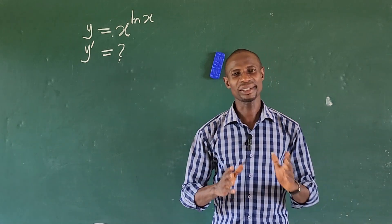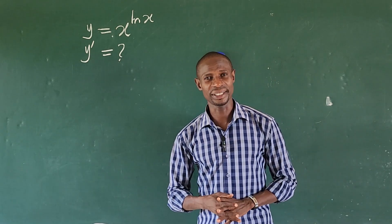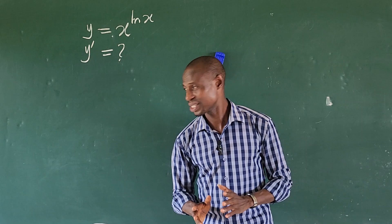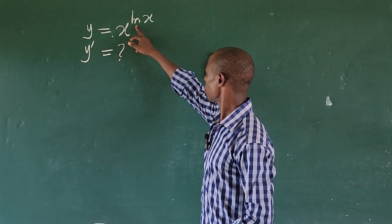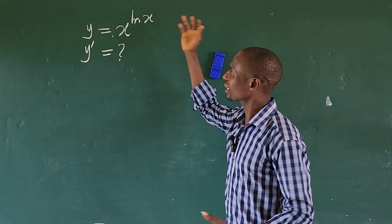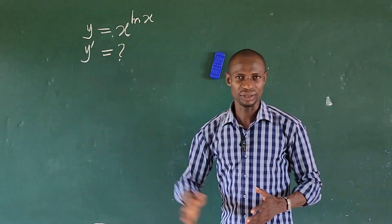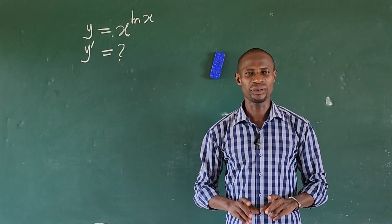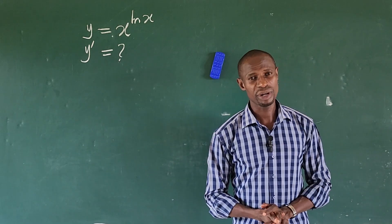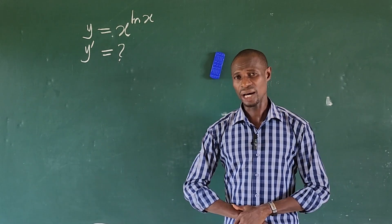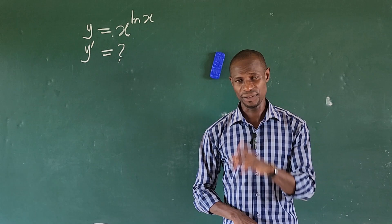Hello everyone, welcome to today's class. Today we have a challenge on calculus. The question is y equals x to the power of ln of x. We are asked to differentiate y. What is the derivative of the function y here with respect to x? So how do we differentiate this?